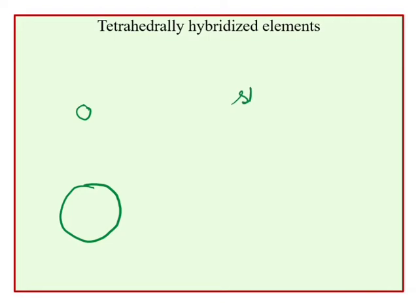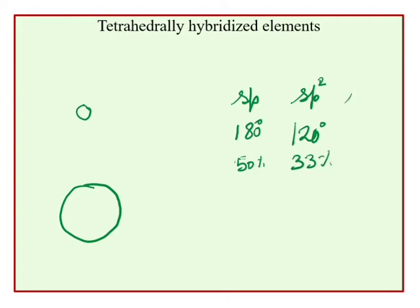For sp2 hybridization, the bond angle is 120° and the percent s character is 33%. For sp3 hybridization, the bond angle is 109° and the percent s character is 25%.